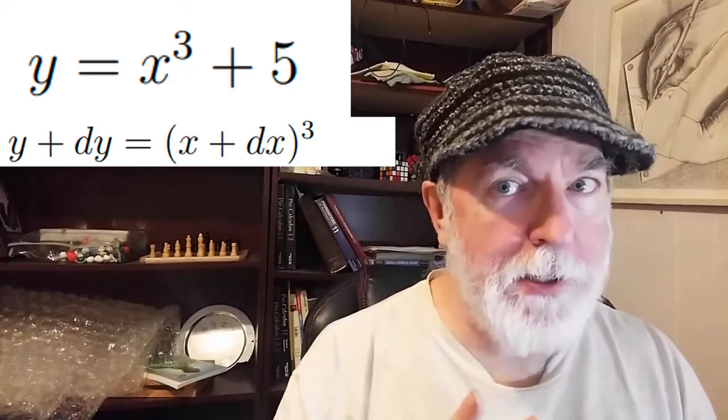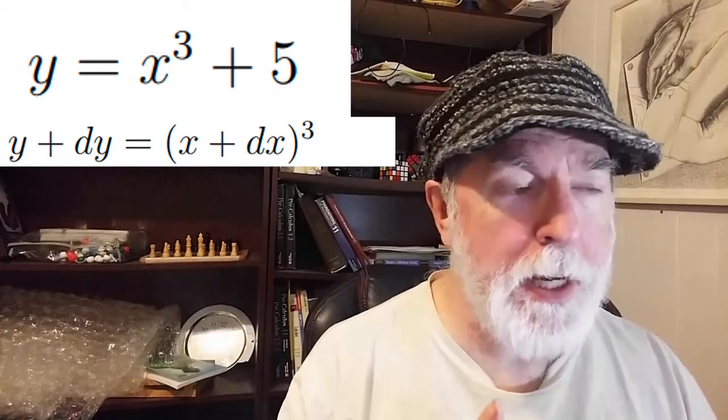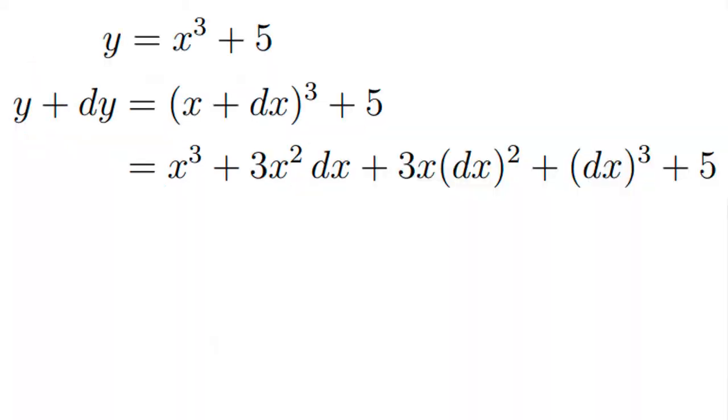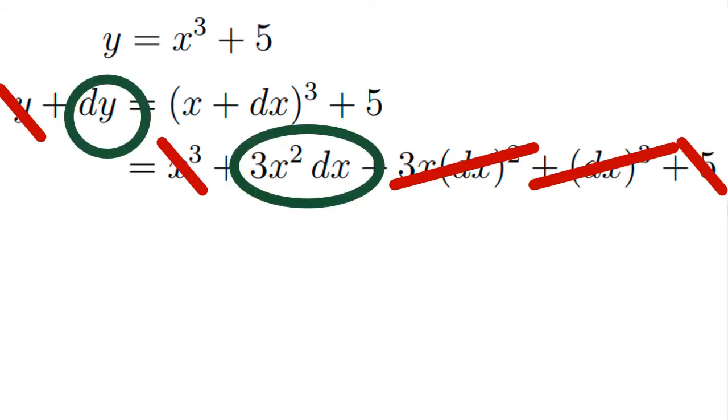And so that new x, that whole new x gets cubed, and we add on 5. As before, we get rid of all the itsy-bitsy, teensy-weensy, tiny-winey, and we just keep the itsy-bitsy. And then now, y from the left, x cubed plus 5 on the right, we end up with dy equals 3x squared times dx.